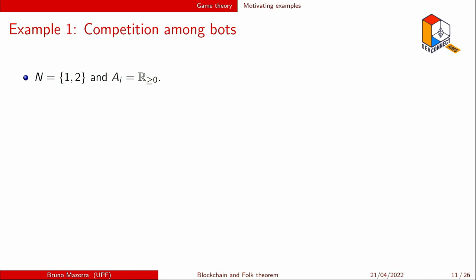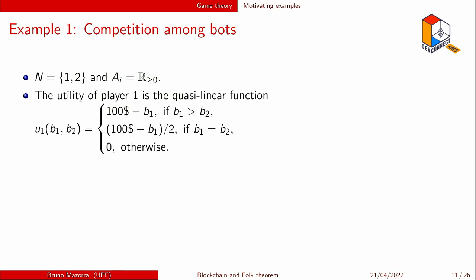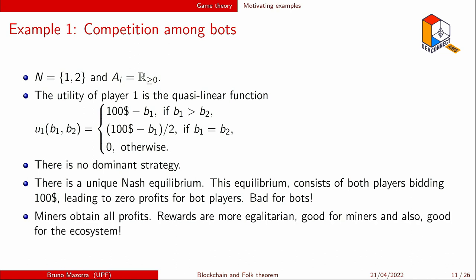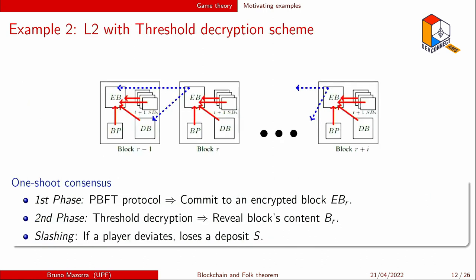Formally: two players, the action space is any positive real number, with a quasi-linear utility function: if I win the bid I obtain 100 minus what I pay; if we tie it's split randomly; if I lose I get zero. There is no dominant strategy, but if you work a little bit you can prove there is a unique Nash equilibrium — and this equilibrium is actually paying everything to the miner. This is bad for bots in general but good for the system, as it leads to more egalitarian payoffs.